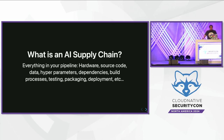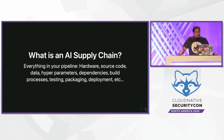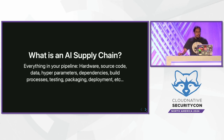Looking at what an AI supply chain is — first, what is a supply chain in general? When you think of a supply chain, you think of the origin of all the things you need in order to produce something: hardware, source code, data, parameters. If it's hardware, where is it sourced? Did it follow all the right processes? All the stuff you need in order to get to your final deliverable.